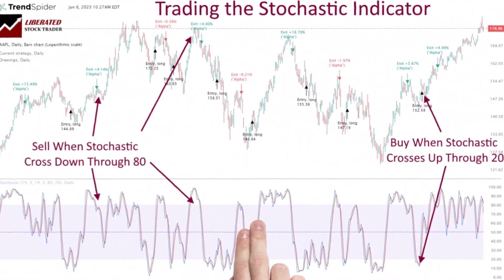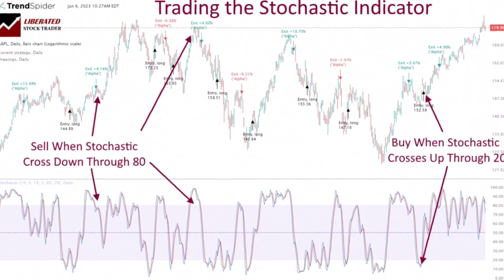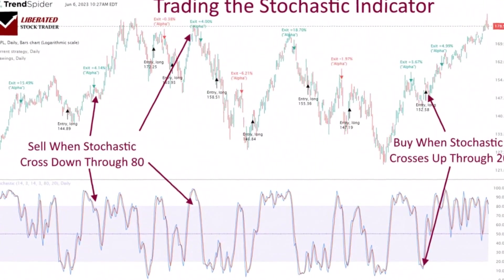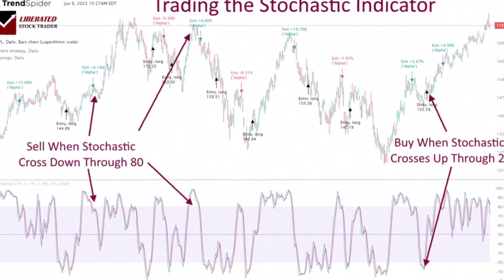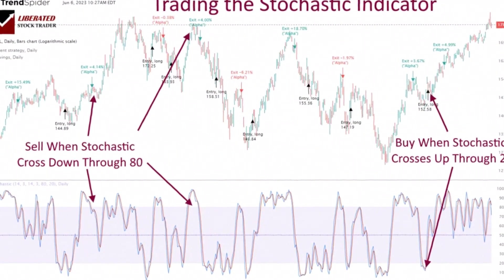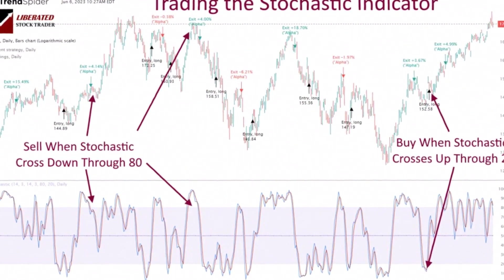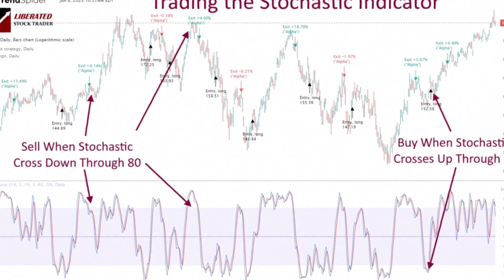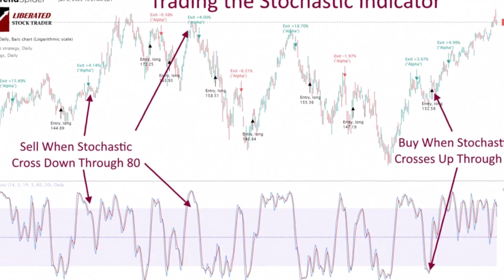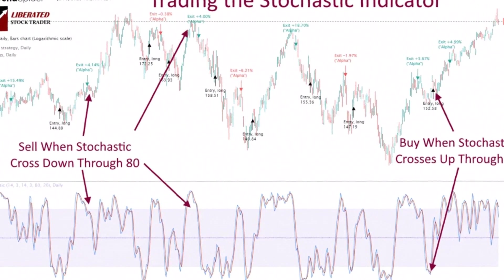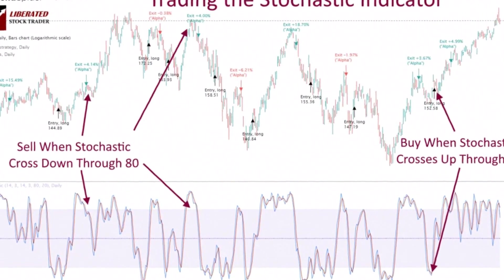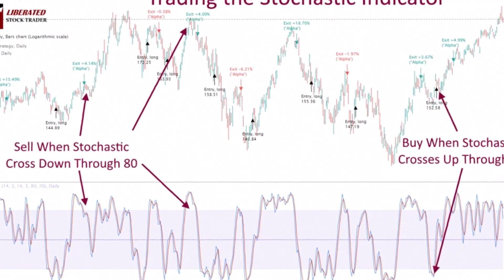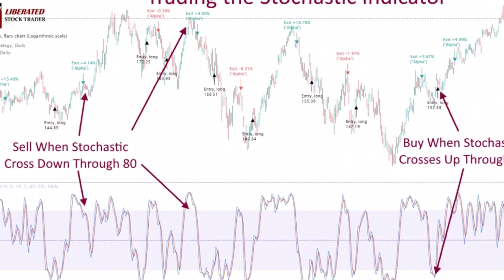The indicator's values range between 0 and 100. Values above 80 indicate an overbought market, suggesting prices may soon decrease and potentially signaling a sell opportunity. Additionally, the stochastic oscillator can form crossovers, which provide further insights into potential buying or selling signals.